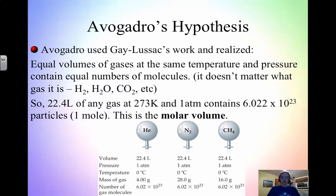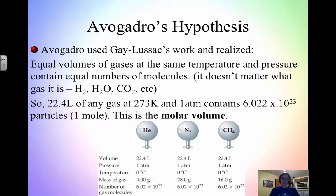Now with Avogadro's hypothesis — building on Gay-Lussac's work — equal volumes of gases at the same temperature and pressure have equal numbers of molecules. If you have equal volume, same temperature, same pressure, you have equal numbers of molecules, regardless of whether it's hydrogen or carbon dioxide. Avogadro came up with the molar volume idea: 22.4 liters of any gas at standard temperature and pressure has Avogadro's number of particles. In the figure, helium, nitrogen, and methane — even though their masses are different — all have one mole of molecules because they all occupy 22.4 liters at STP.